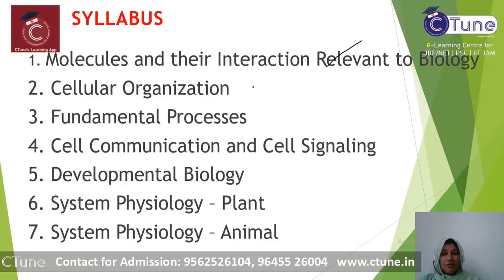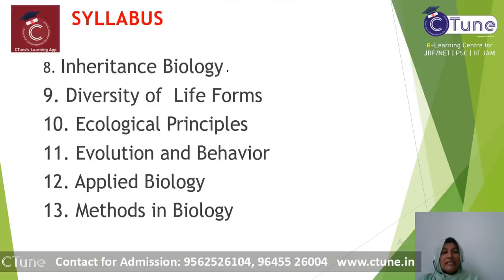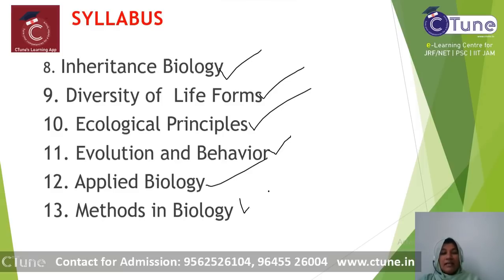The 13 units of the CSIR Life Science NET syllabus are: Unit 1 - Molecules and Their Interaction Relevant to Biology; Unit 2 - Cellular Organization; Unit 3 - Fundamental Processes; Unit 4 - Cell Communication and Signaling; Unit 5 - Developmental Biology; Units 6 and 7 - System Physiology of Plants and Animals; Unit 8 - Inheritance Biology or Genetics; Unit 9 - Diversity of Life Forms; Unit 10 - Ecology; Unit 11 - Evolution and Behavior; Unit 12 - Applied Biology; and Unit 13 - Methods in Biology.